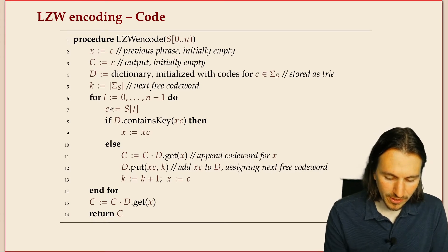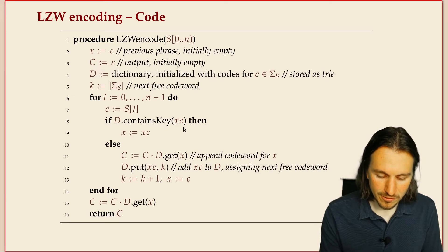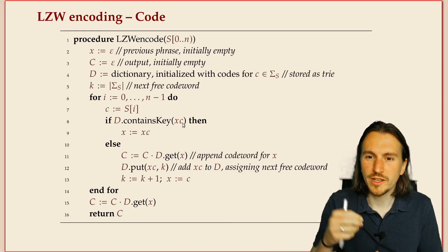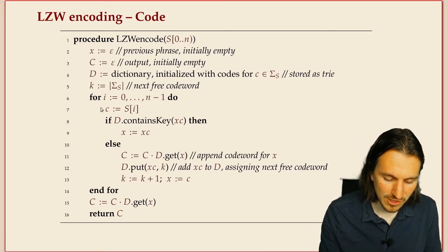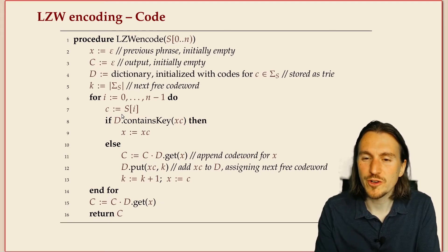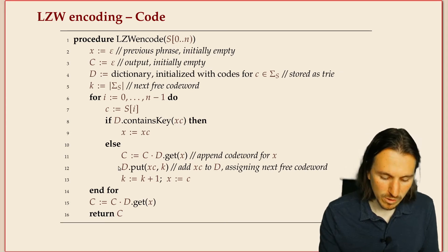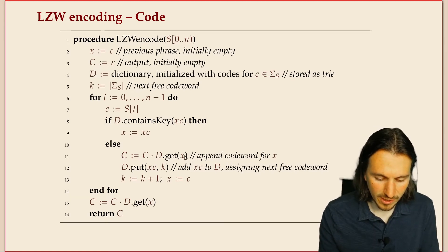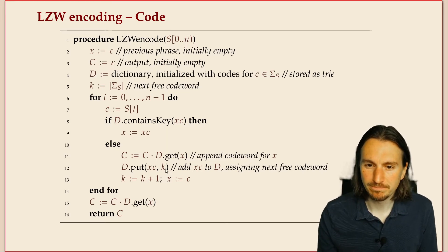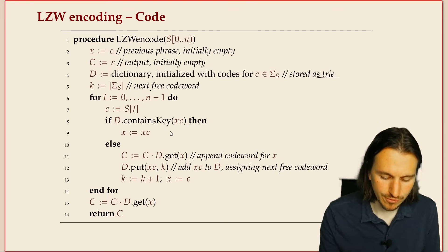The code starts with an initially empty phrase, an empty coded text, and the dictionary initialized as a trie containing just the single character strings. The next free code word is stored in k. We walk through positions in the text, getting the next symbol. We try to find x concatenated with c in the dictionary — that's walking down the trie along the next character. We continue traversing as long as we find matches; the first time we fail, we output the code word for x, add the one-character-longer phrase to the dictionary, and assign it the next free code word. Using a trie, each traversal step is constant time.